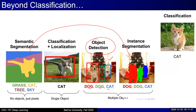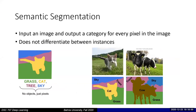In instance segmentation, you provide pixel-level class labels, but unlike semantic segmentation, you discriminate between multiple instances of the same category. For example, in semantic segmentation, two cows would both be labeled simply as 'cow.' In instance segmentation, they would be labeled 'cow one' and 'cow two' separately. This distinction is important: semantic segmentation does not discriminate between multiple instances of the same class, while instance segmentation does.